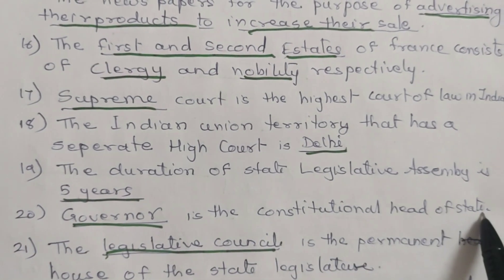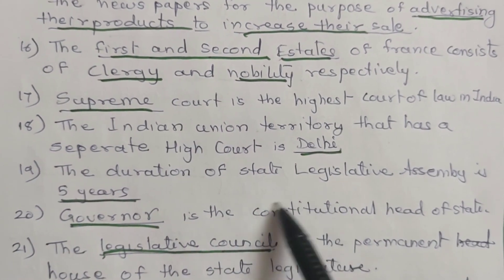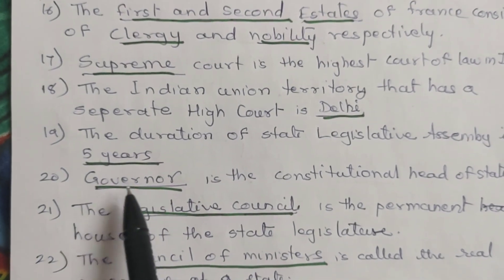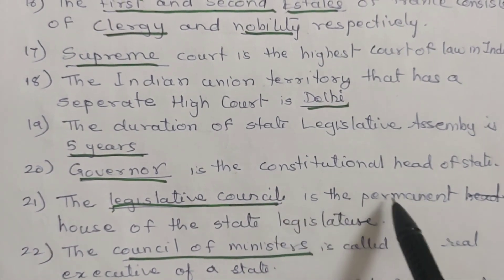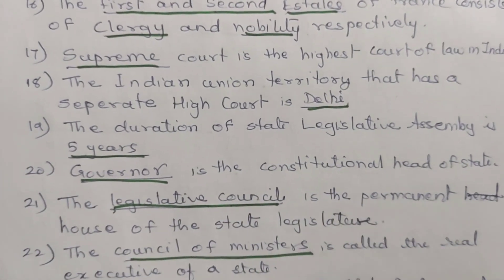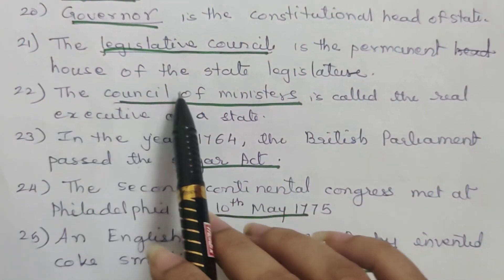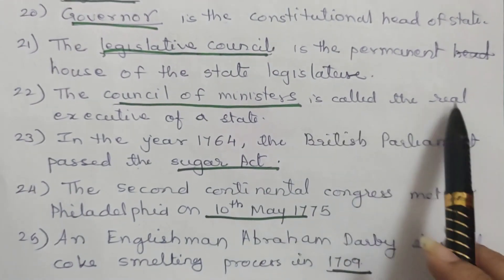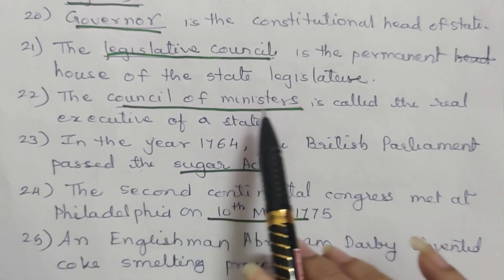20. The Governor is the constitutional head of state. 21. The Legislative Council is the permanent house of the state legislature. 22. The Council of Ministers is called the real executive of a state.